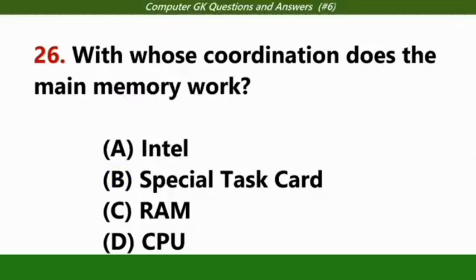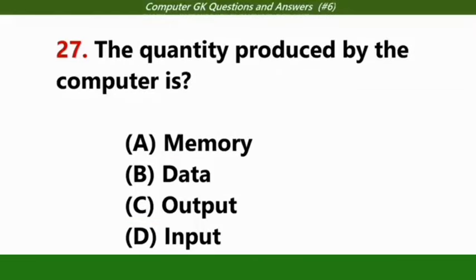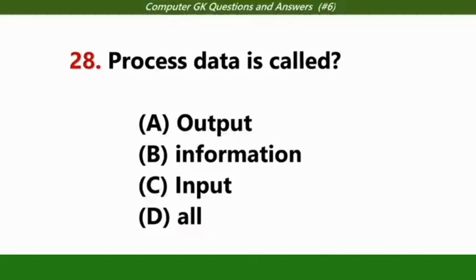With whose coordination does the main memory work? Answer D, CPU. The quantity produced by the computer when it processes data is called? Answer B, information.